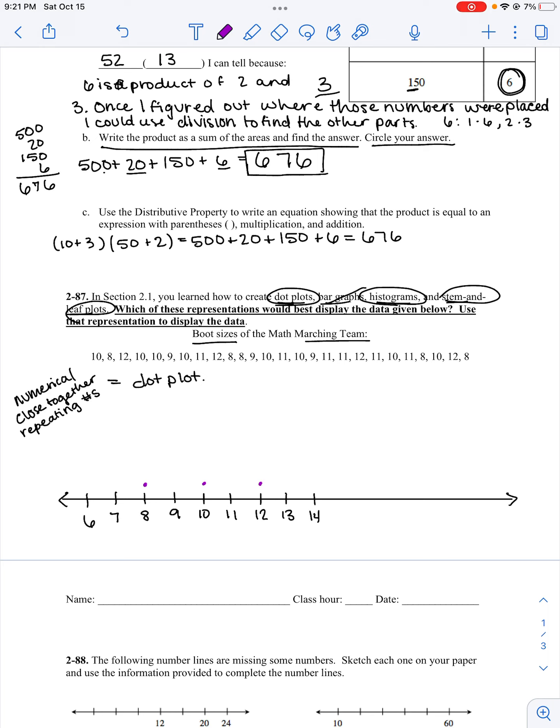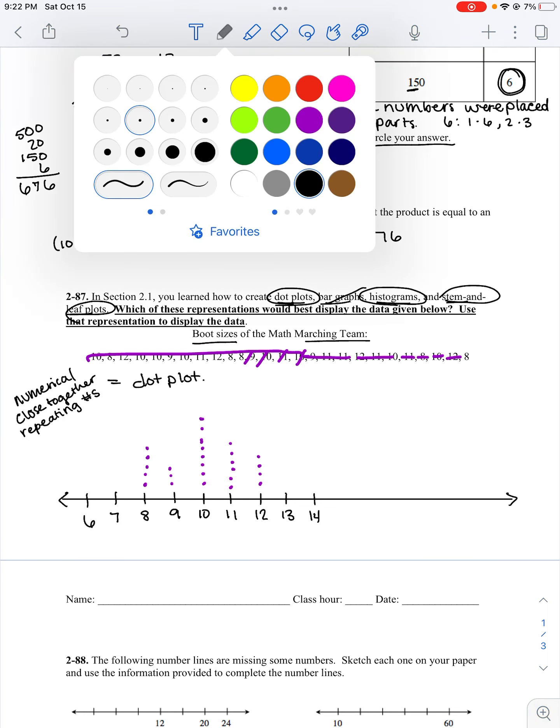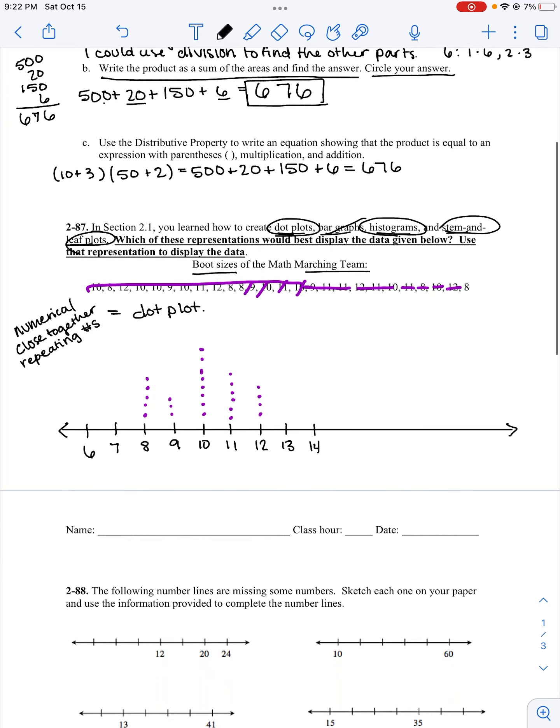So I'm going to start with 10, 8, 12, 10, 10, 9, 10, 11, 12, 8, 8, 9, 10, 11, 10, 9, 11, 11, 11, 12, 11, 10, 11, 8, 10, 12, and 8. Looks like 10 is the most popular shoe size or boot size for the math marching team.